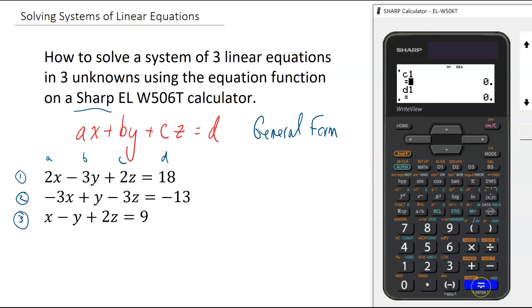And equals in between each value. Now we are waiting for C1 and D1, which are two and 18, so two, enter, 18, enter.